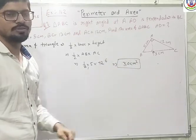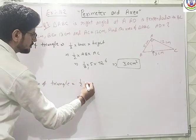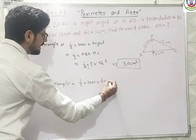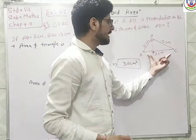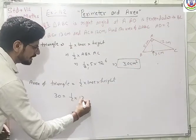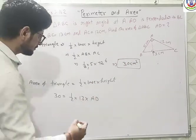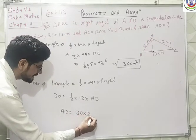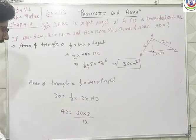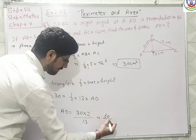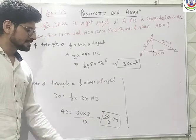Next, we have to find the length of AD. Again we apply the area of triangle formula: area equals 1/2 multiply base multiply height. Area is 30, the base this time is BC equal to 13 cm, and height is AD. So AD is equal to 30 multiplied by 2 divided by 13, which gives 60/13 cm. So the length of AD is 60/13 cm.